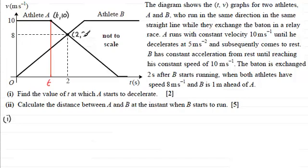And so we can get that gradient very easily as being the difference in the velocities divided by the difference in the times. So if we look at that, we've got the difference in the velocities, that's 8 minus 10, divided by the difference in the time, which is going to be 2 minus t. And this gives us acceleration, which is going to be minus 5.